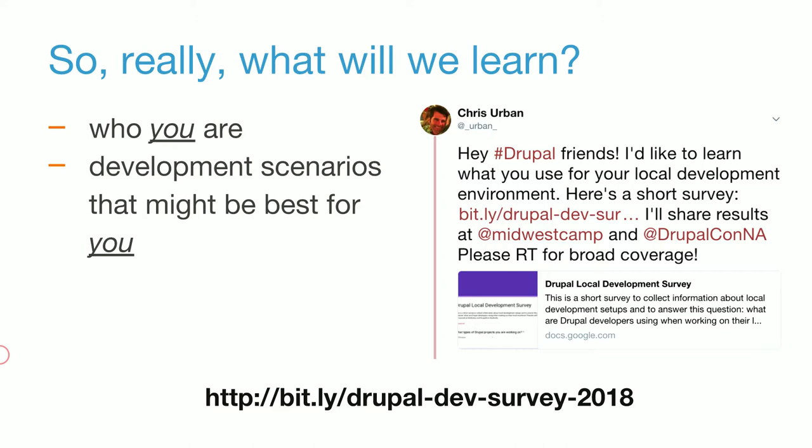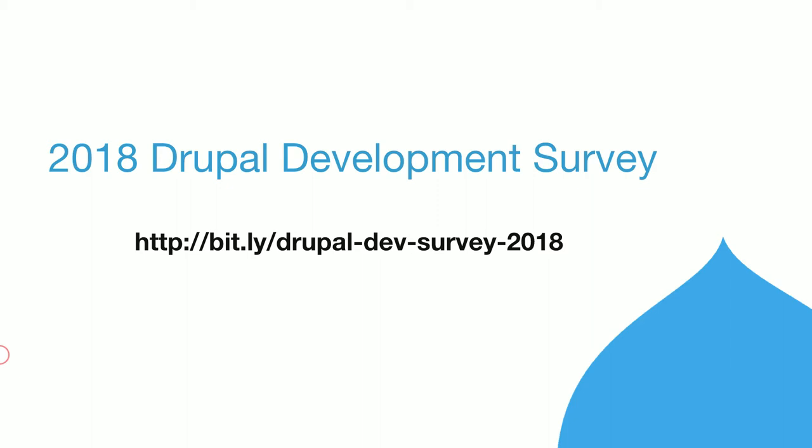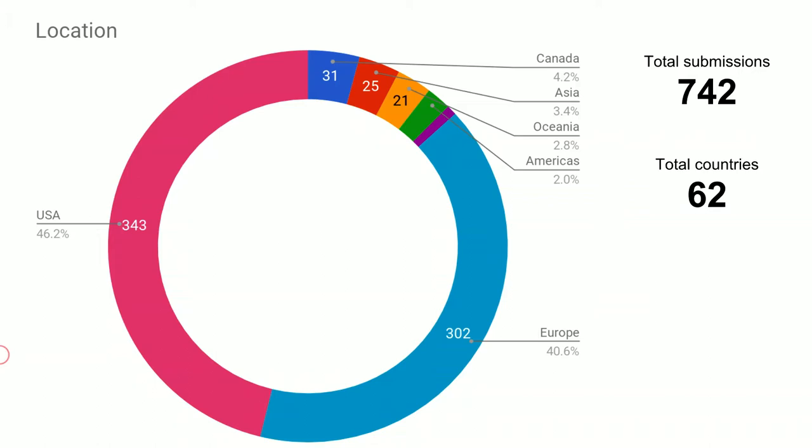For the first time we're releasing all of this info. This will answer the question of who you are, and that will let us give you some direction about what we think are some good development scenarios for you. We're up to over 700 submissions from over 60 countries, which is fantastic. We've got representation from every continent — obviously dominated by the United States and Europe, which I kind of expected, but we're very pleased by the sample from other countries.